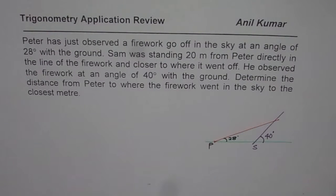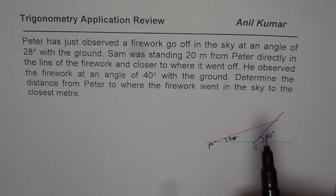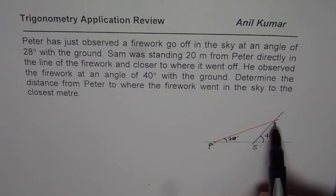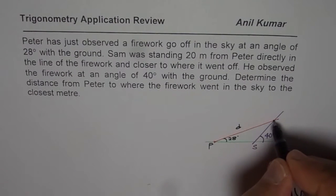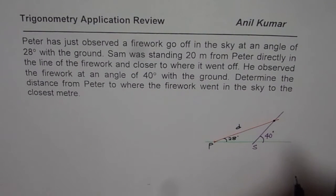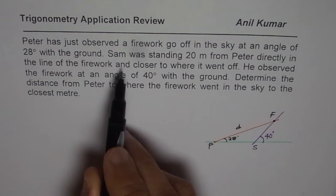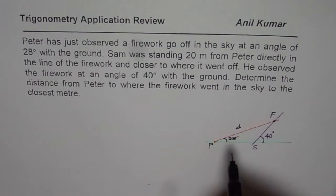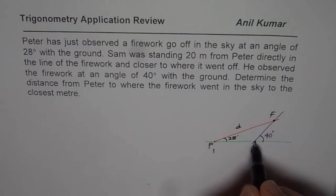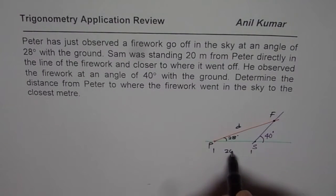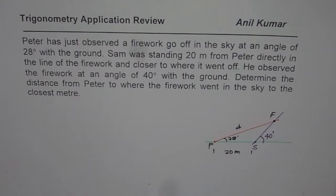What do we need to find? We need to find the distance of the firework from Peter, so let us call that distance D. Let us call the firework's position point F. We are also given that Sam is standing 20 meters from Peter, meaning the distance between P and S is 20 meters.